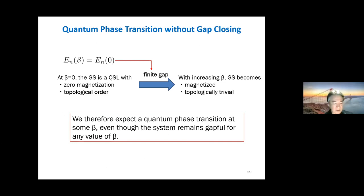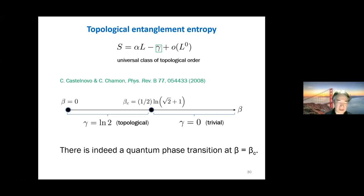At beta equals zero, the ground state is a quantum spin liquid with zero magnetization and topological order. When increasing beta, the spin imbalance increases and the ground state becomes magnetized and topologically trivial. We therefore expect a quantum phase transition at some beta, even though the system remains gapful for any value of beta. To show this explicitly, we consider topological entanglement entropy.